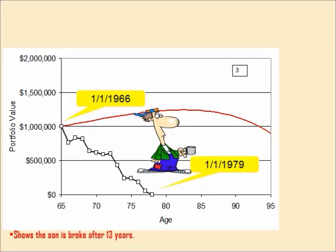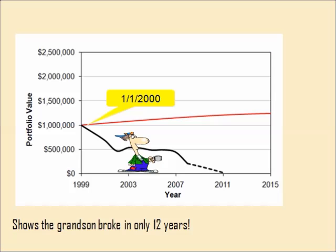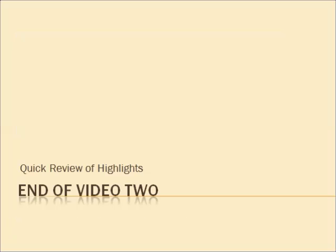Now let's look at the son, who retired on January 1st, 1966. Using true historical numbers, the money ran out at about age 77 or 78 — he went broke as well. The red distribution curve is still there showing what should have happened, but the actual historical returns tell a different story. Then the grandson, who retired on January 1st, 2000 — he's broke in 12 years. By 2011 he has run out of money, again demonstrating the severe impact of sequence-of-returns risk.